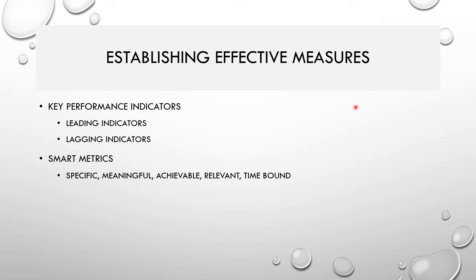Now let's look at the functions associated with the Measurement Performance domain. The first function is establishing effective measures — you need to establish your Key Performance Indicators. There are two types of KPIs: leading indicators and lagging indicators. Leading indicators give you a sense of the trending progress of the project. For example, a burndown chart is a leading indicator showing whether the team is progressing as desired for a sprint.